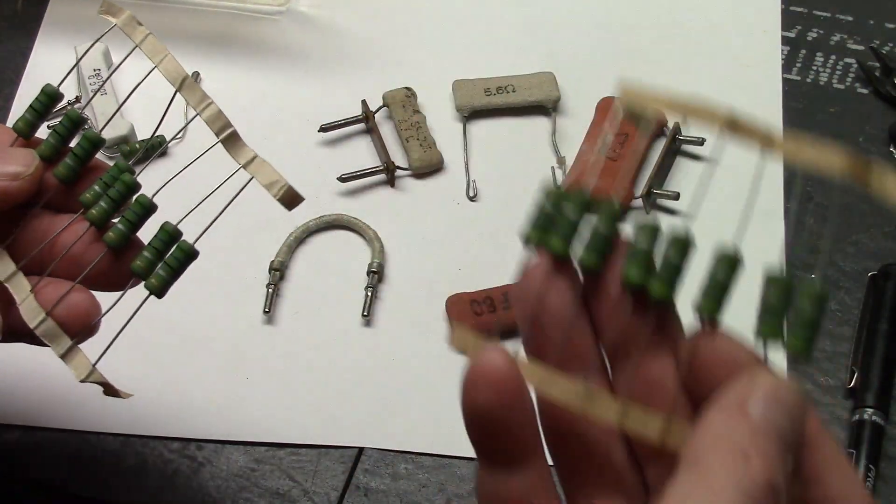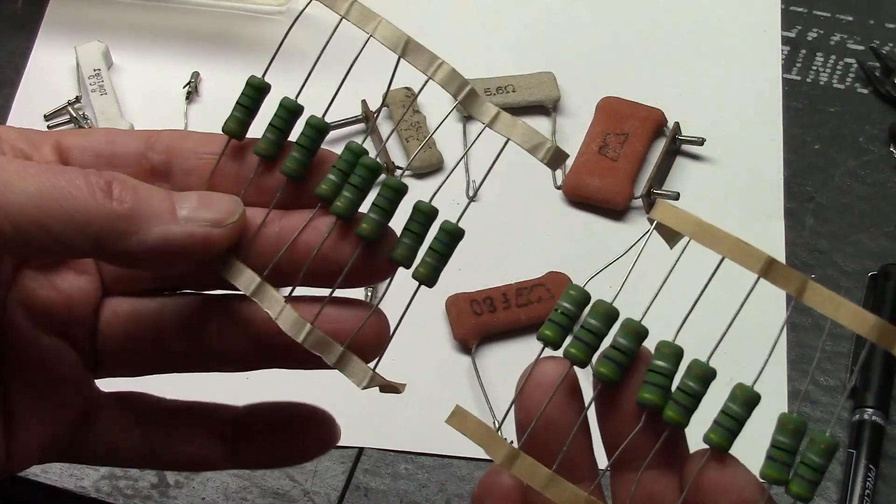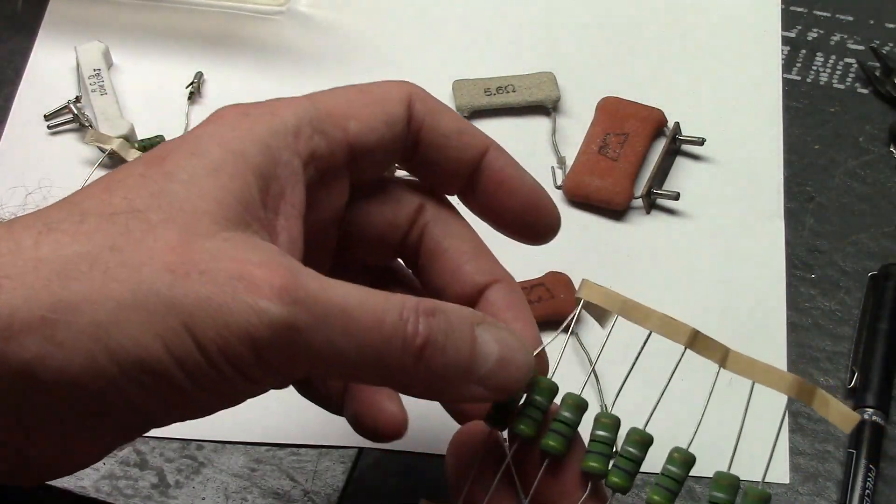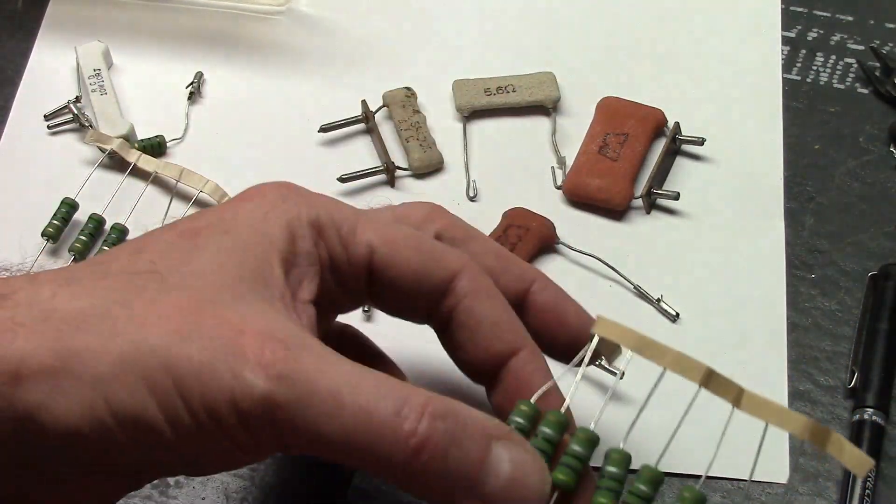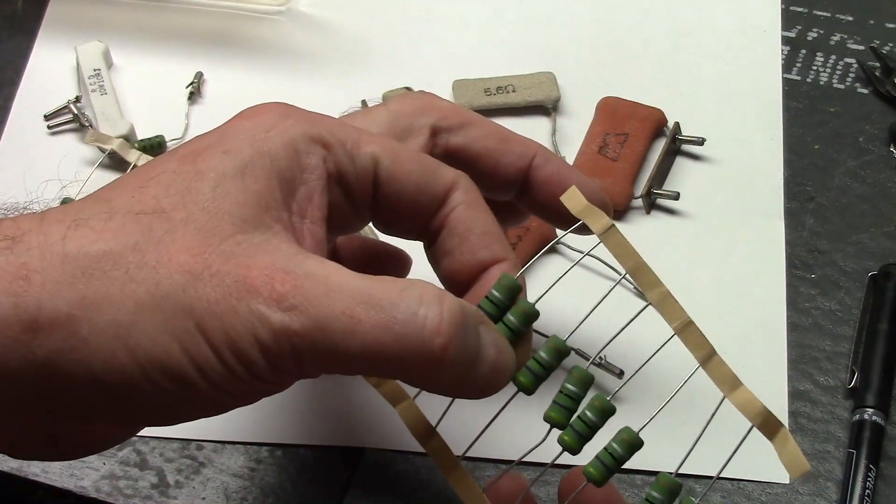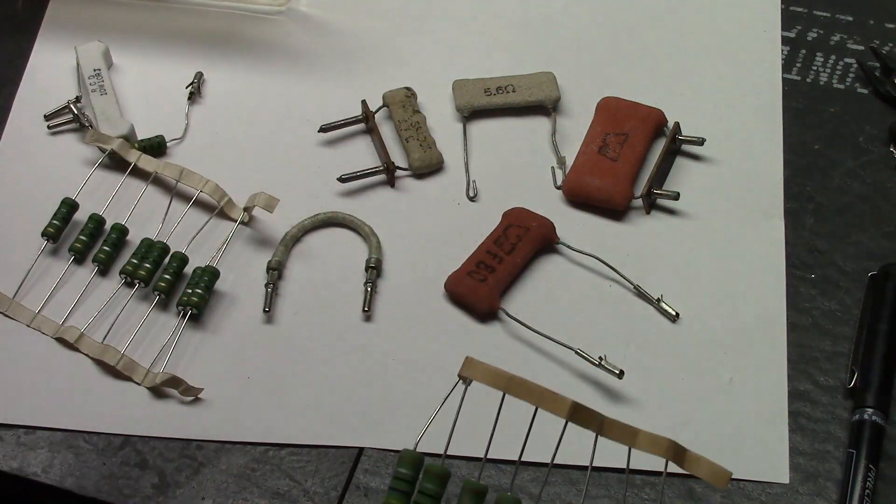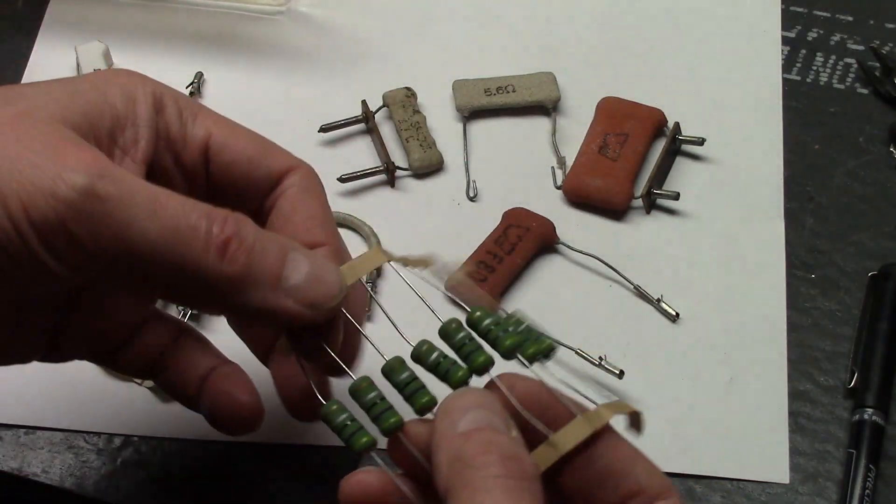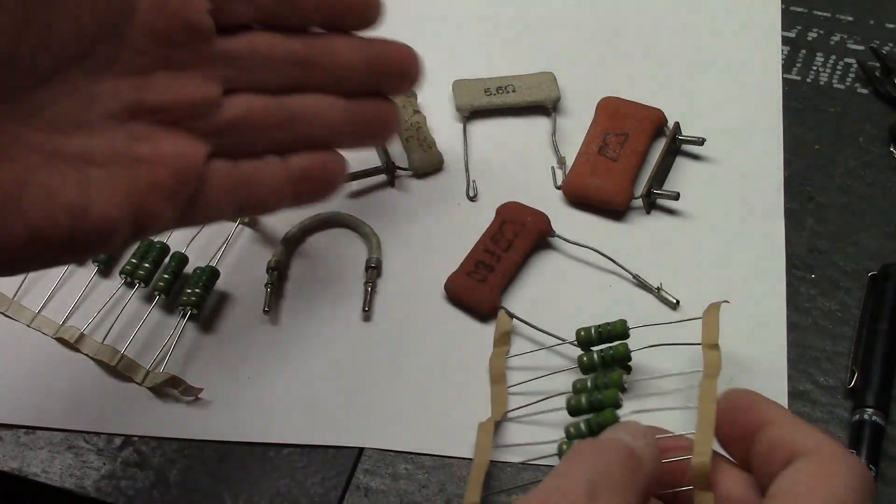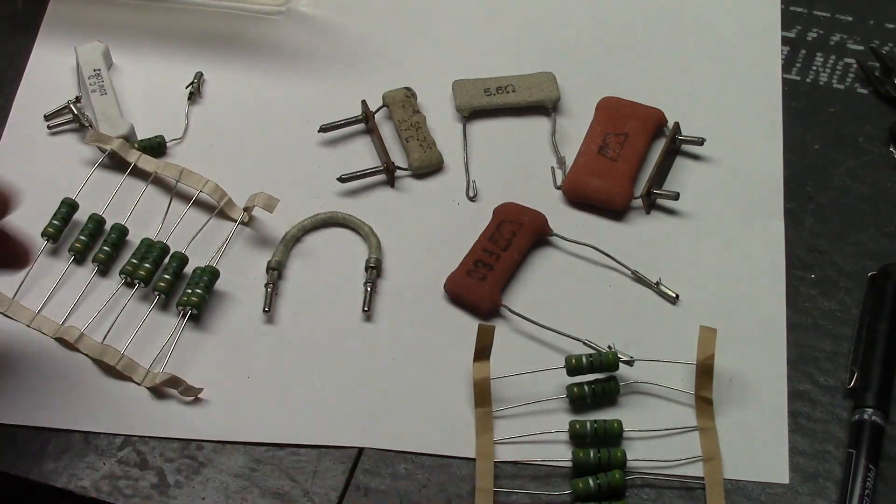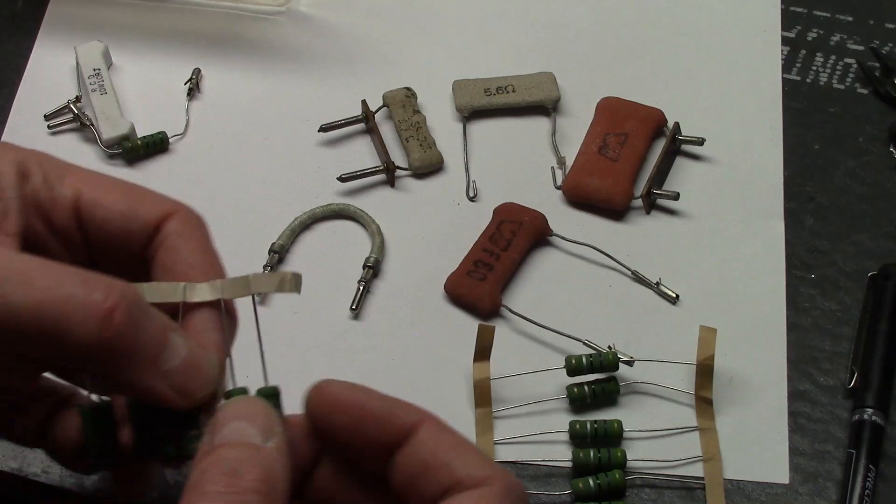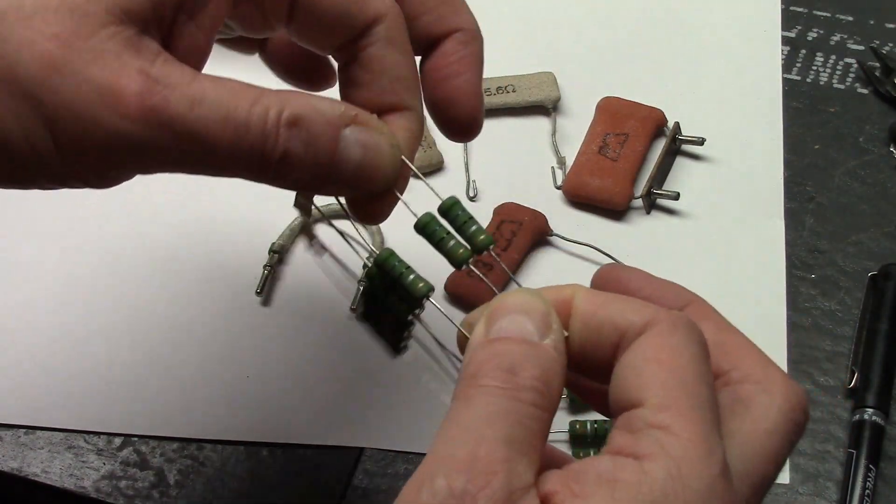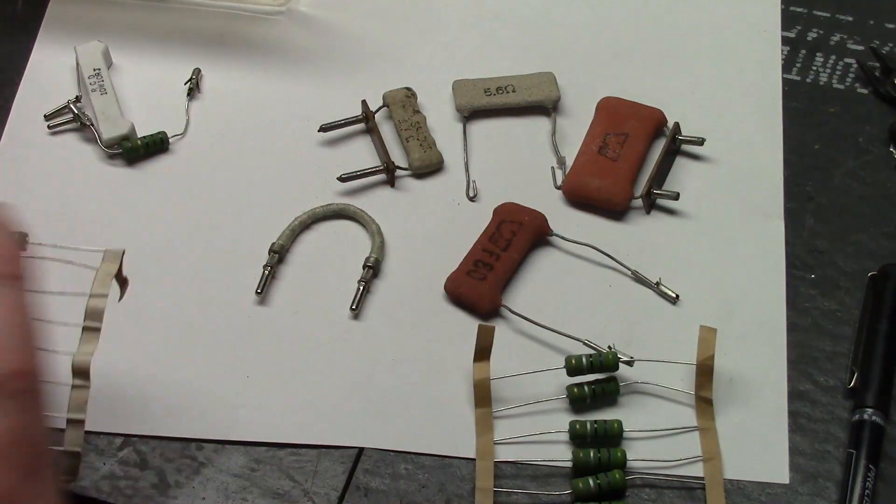So these are some 4.7 and some 5.6 ohm 5 watt fusible resistors. These aren't quite as robust as these, but you can put two of them in parallel. And if you're using modern silicon rectifiers, they can handle much higher surge current than the originals. So even if you cut it from 5.6 down to 2.5, which is what would be the equivalent if you put two in parallel, this will be 10 watt. So put two of these in parallel to replace one of these, you'll be fine.